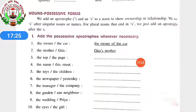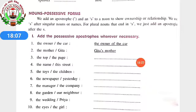Add the possessive apostrophe wherever necessary: 'the owner, the car' — the owner's car. 'The mother, Gita' — Gita's mother, singular apostrophe s. 'The top, the page' — the top of the page; apostrophe not necessary here. 'The name, this street' — this street's name; street is singular so apostrophe before s. 'The toys, the children' — toys and children are both plural. Children is an irregular plural noun, so children's — apostrophe s — toys. The rest you have to do by yourselves.